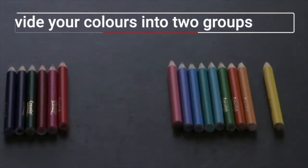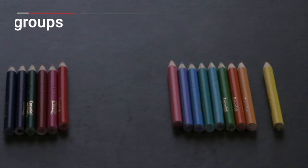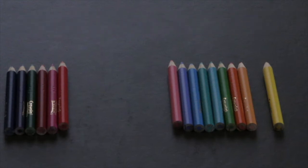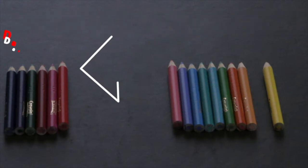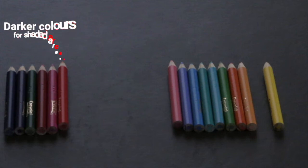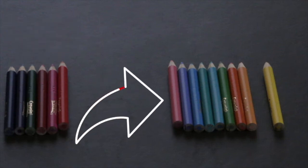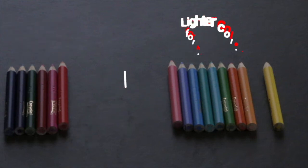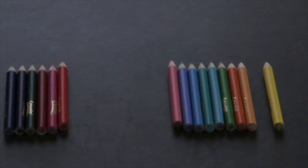A good tip is to divide your colour materials into two groups. Move the darker colours, which you'll use for shaded areas, to the left-hand side, and your lighter colours, which you'll use for highlighted areas, to the right-hand side.